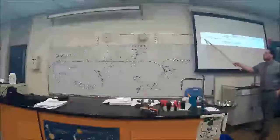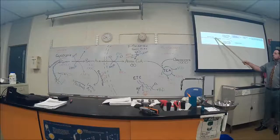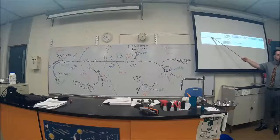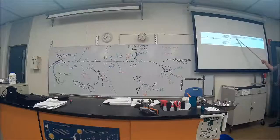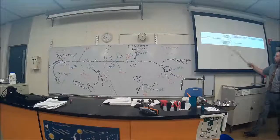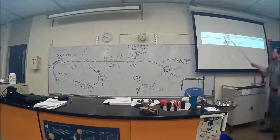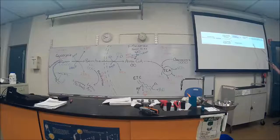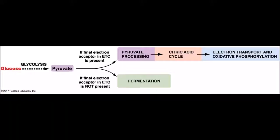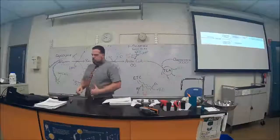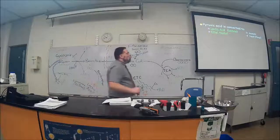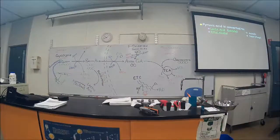Glucose changes into pyruvate by glycolysis. If there's oxygen, pyruvate processing occurs — making acetyl-CoA — and it enters the mitochondria, going through the citric acid cycle and electron transport chain. If there is no oxygen, it goes into fermentation.